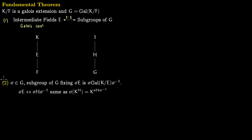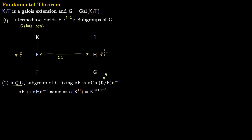In this lecture we want to prove the following result. Say you take an element σ in g; then a subgroup of g which fixes σ(e) is σHσ⁻¹, where H is the group of automorphisms of k which fix e. We call this h because we already have this one-to-one correspondence: h fixes e, and corresponding to fixed field e you have h. Now, picking σ in g, you have field σ(e), and the correspondence is: σ(e) corresponds to σHσ⁻¹.